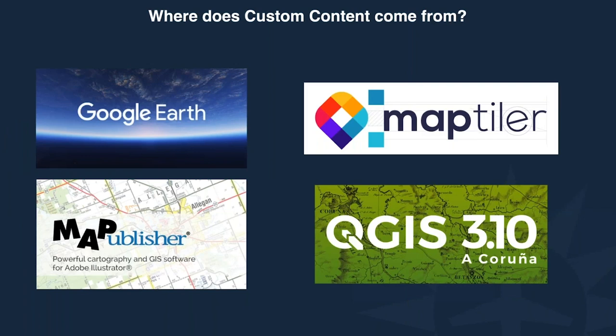Some tools you can use to create custom content: the most popular is Google Earth, and for more advanced features such as geo-referencing — the ability for the program to know where the map is located on the earth and present it in the moving map — other programs include MapTiler, QGIS, and Map Publisher. Google Earth, MapTiler, and QGIS are free apps, while Map Publisher is pay-to-use, so most people gravitate toward the free options. Today's examples will be demonstrated using Google Earth.